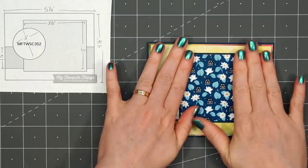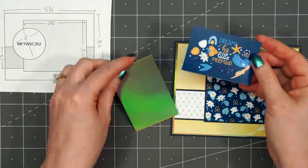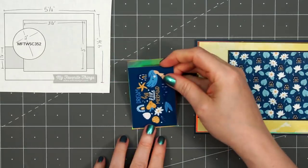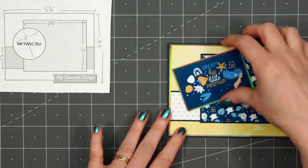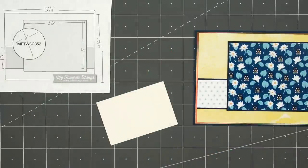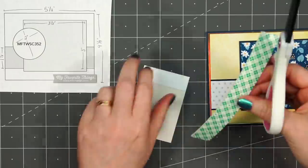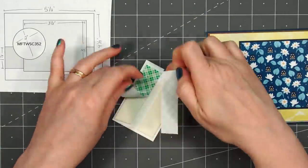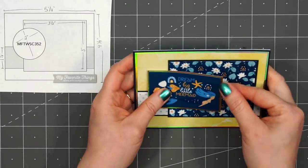This sketch does have a circle indicated for the image or sentiment. I'll be using one of the cut-aparts instead. This has a little mermaid, some fish and flowers, and the sentiment is dream big little mermaid. I thought that was really sweet. I layered it on the same gold holographic cardstock and I will be popping it up using some foam dimensional tape. I'll just remove the release paper and adhere it to the left hand side of the card.